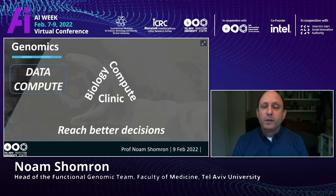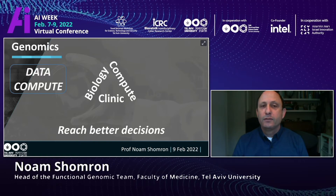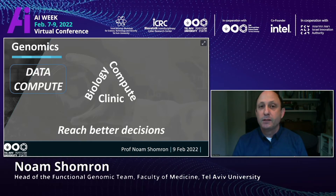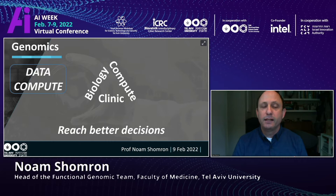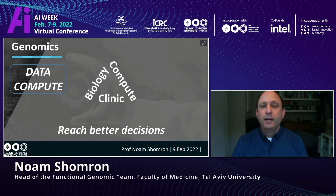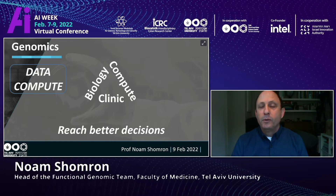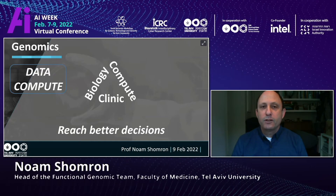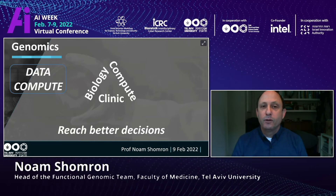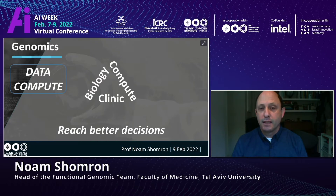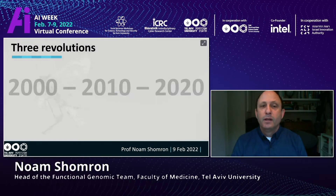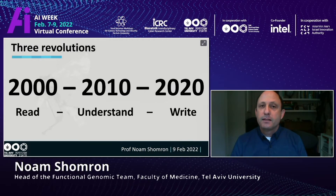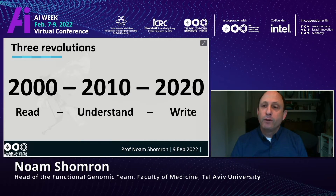For that, we collect a lot of data — it could be DNA, it could be RNA, it could be clinical information. We require a lot of computational power to process this data. We are basing our analysis on three revolutions.